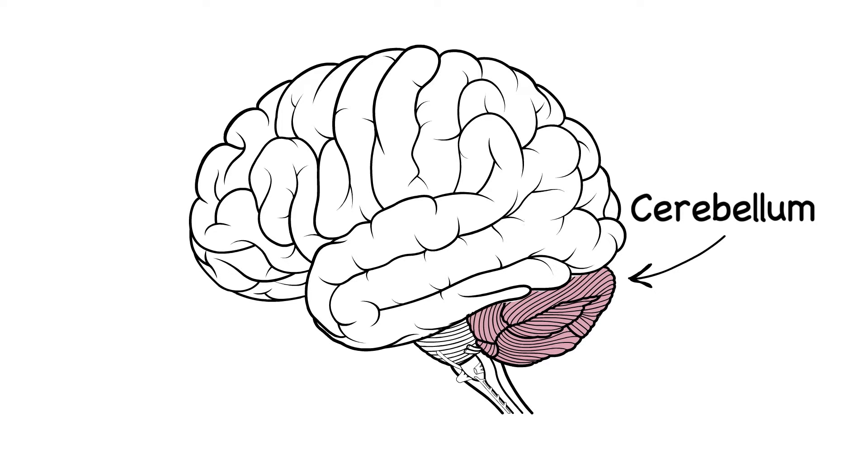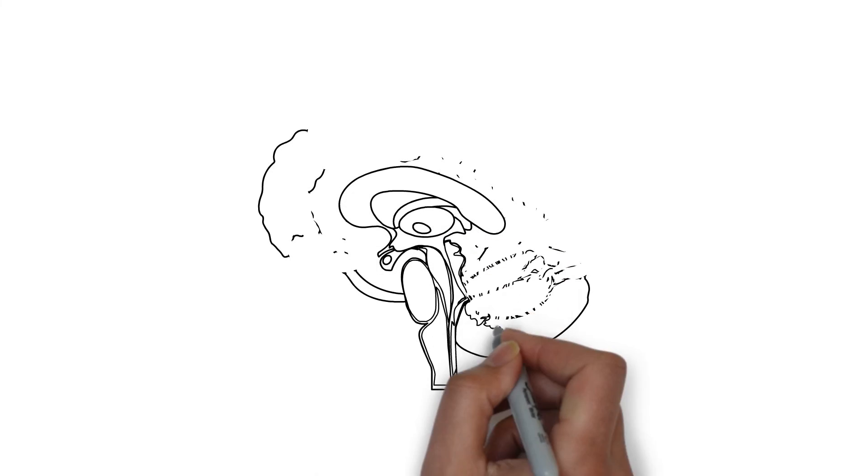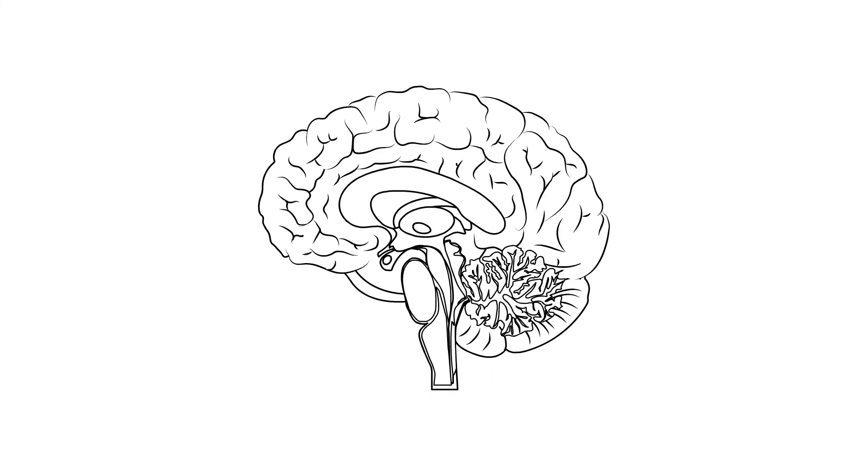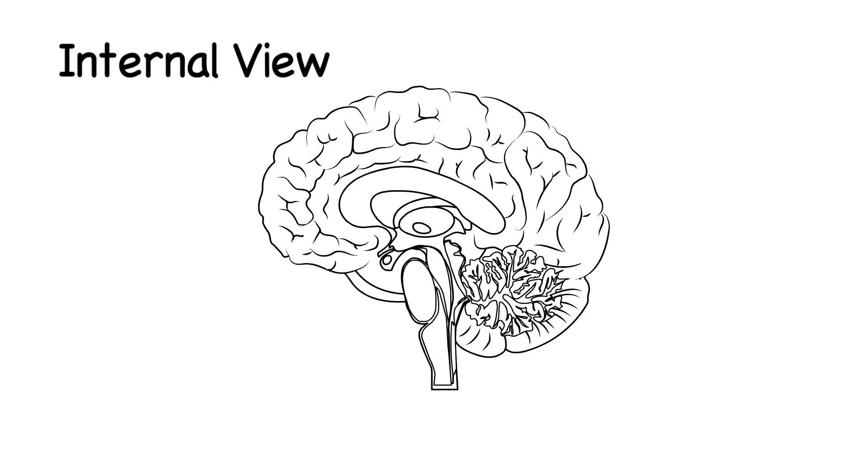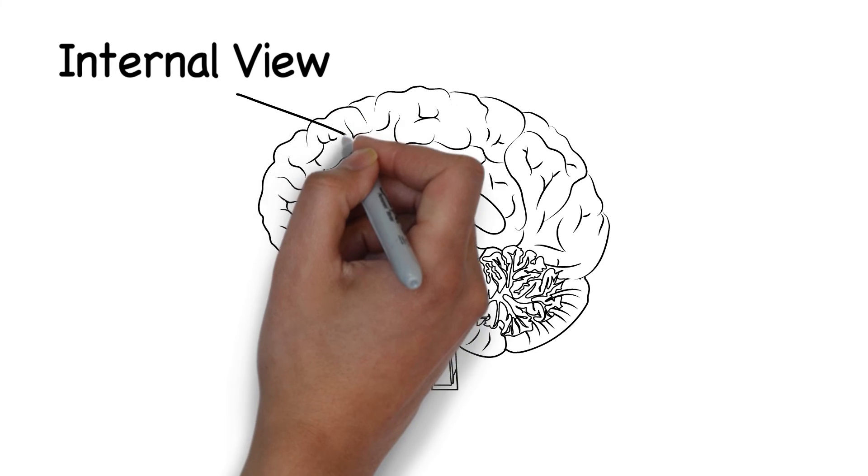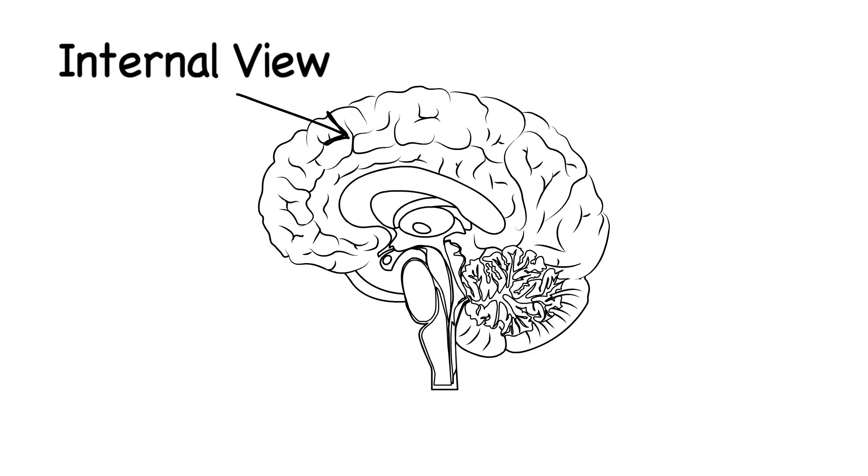So far we have looked at the external structure of the brain but there is more to explore in the internal structure. As you can see the folded appearance of the brain comes over into the internal surface that goes down between these two parts of the brain.